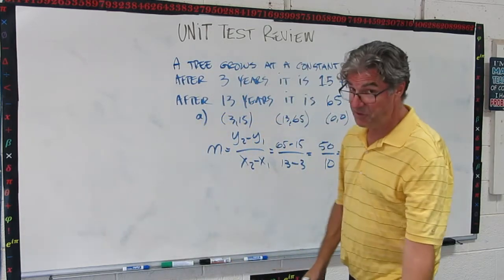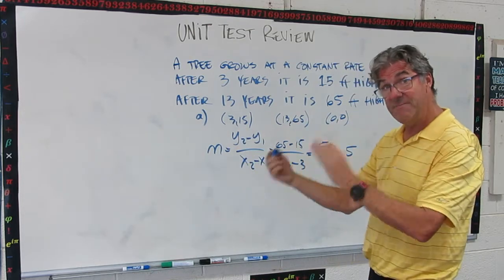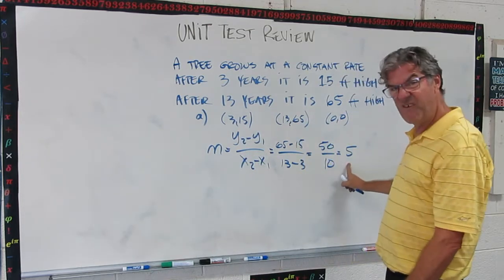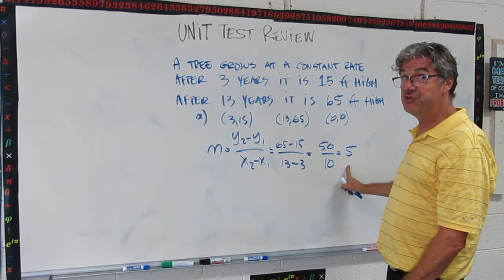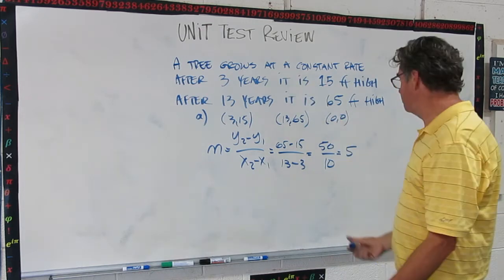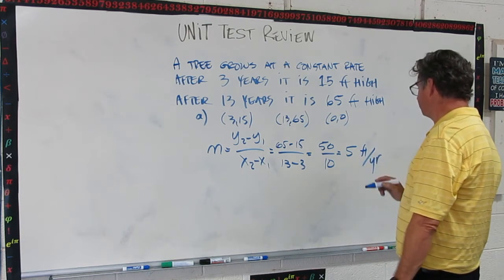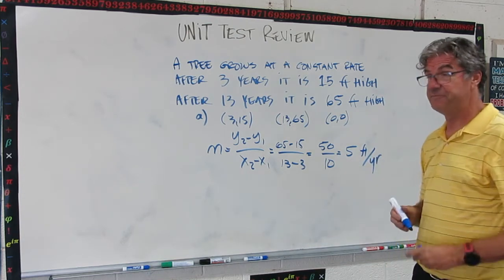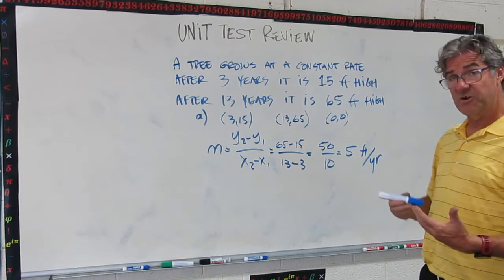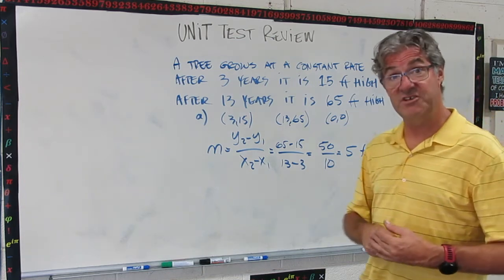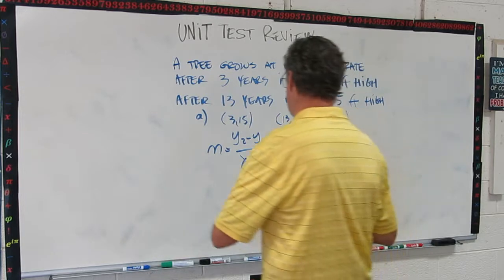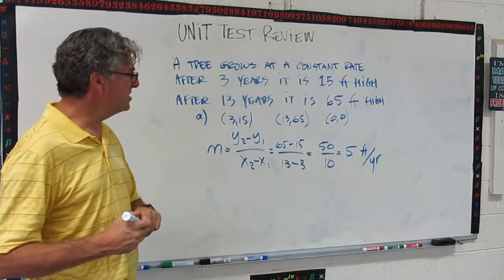Now, when it asks you for a slope for purely mathematical, 5 is fine. But when it asks you for the rate of change, you've got to look at your example and put the correct units. So this is feet per year. Okay, so don't forget your units. Now, another question might be, what's the equation for this function? Now, this one's pretty straightforward.